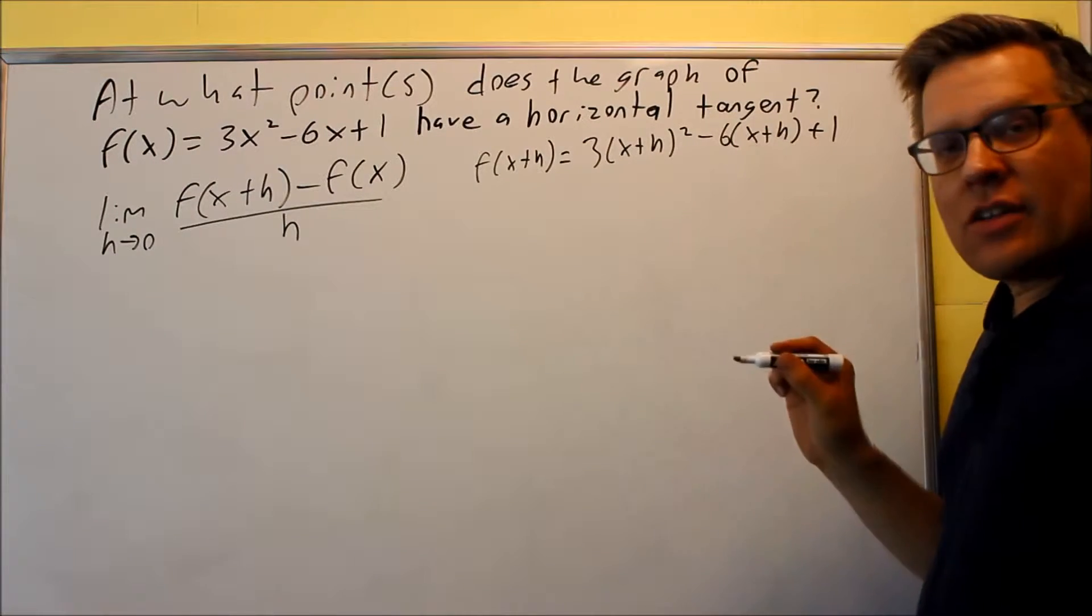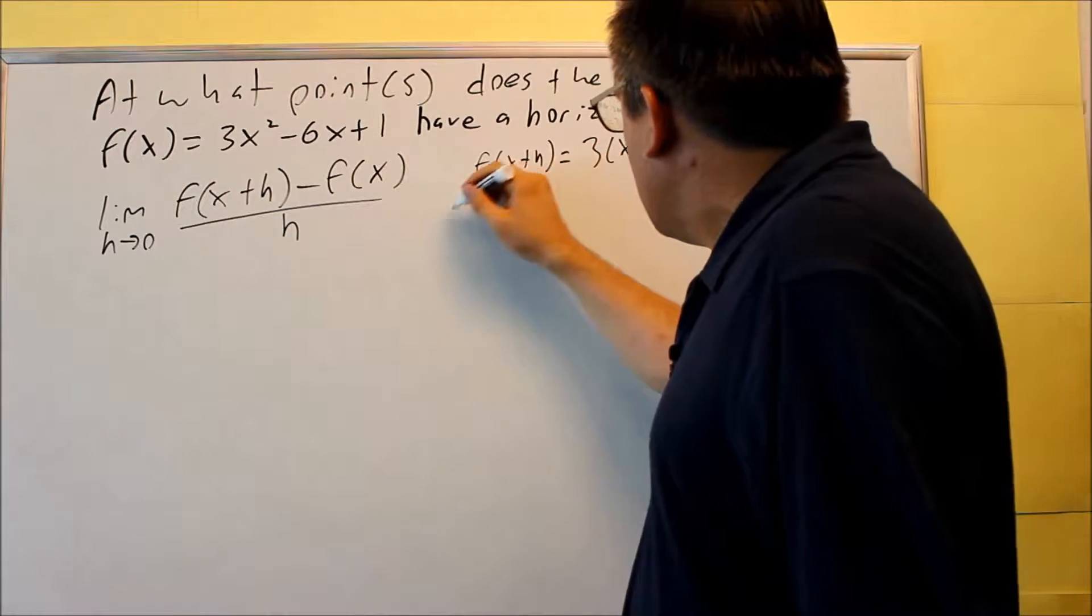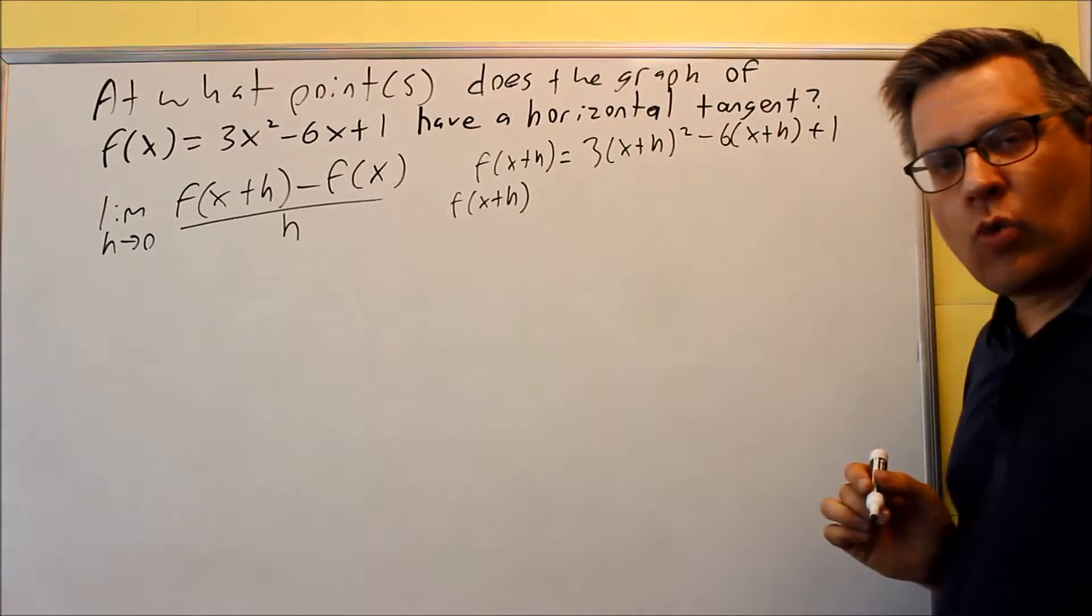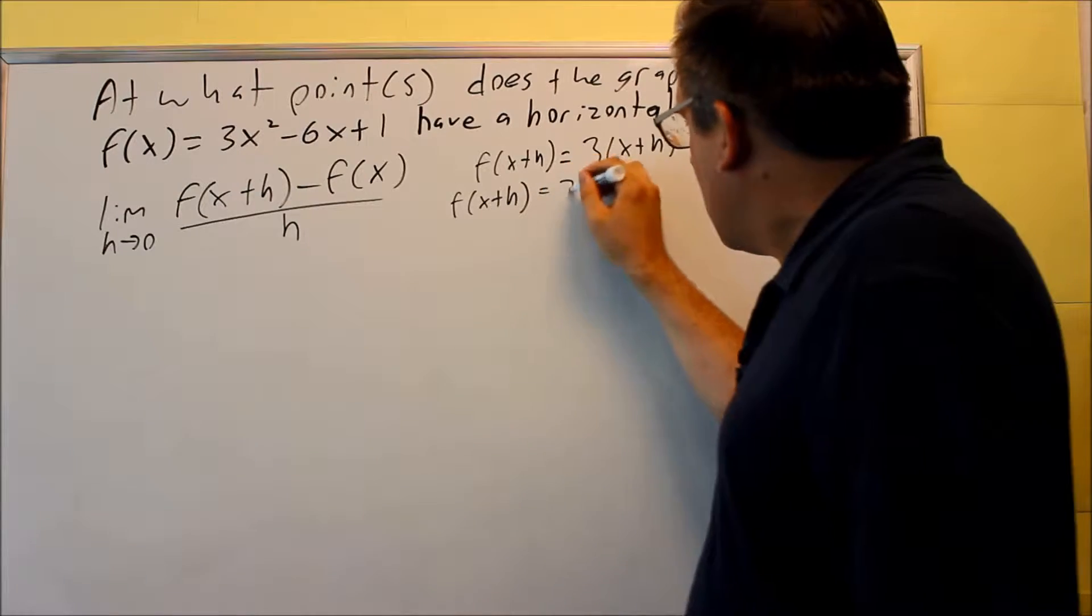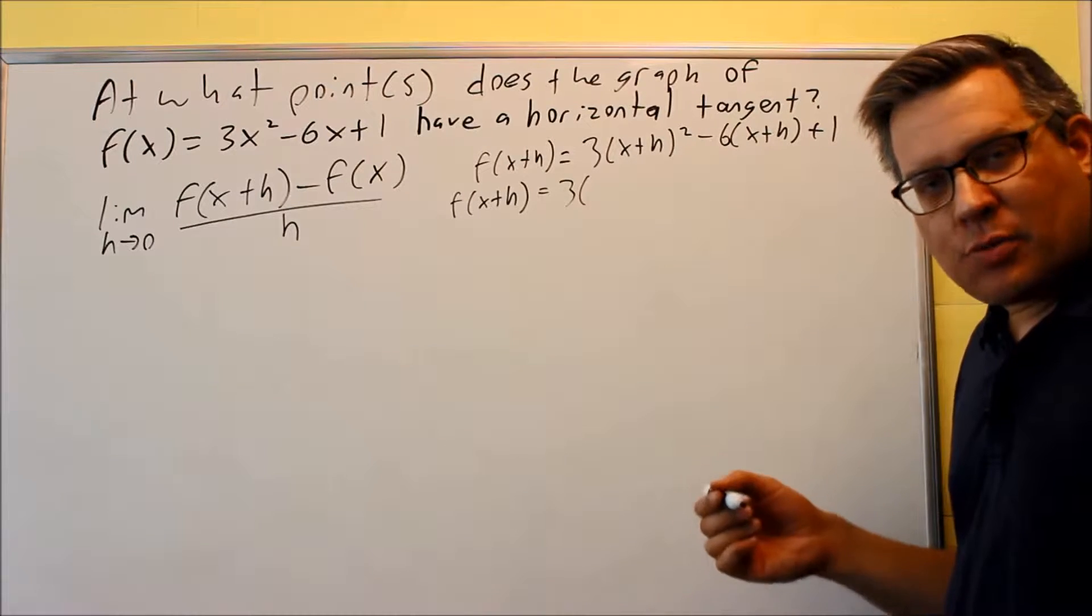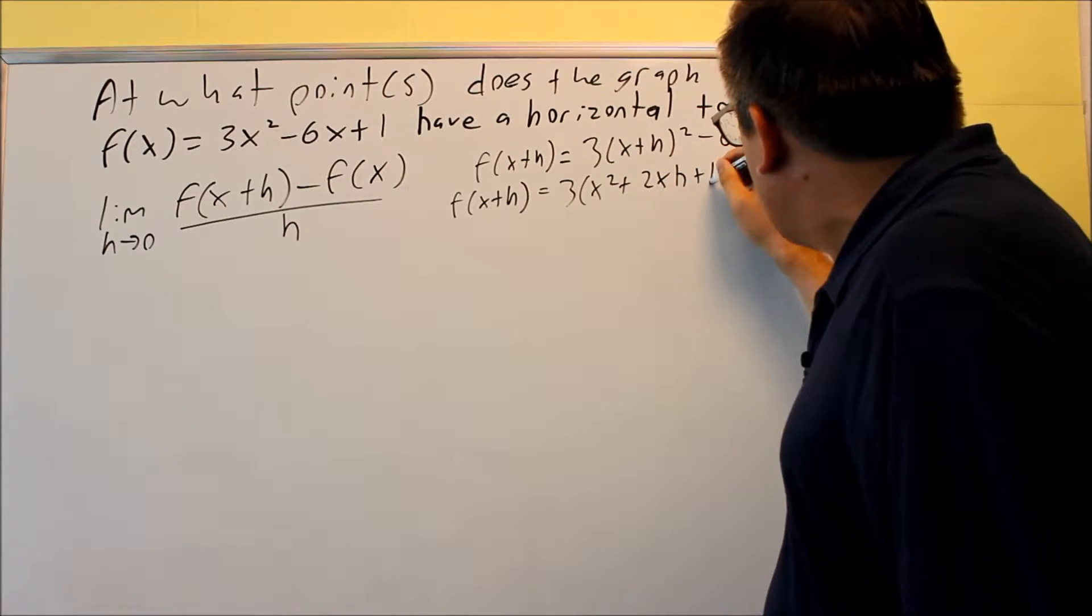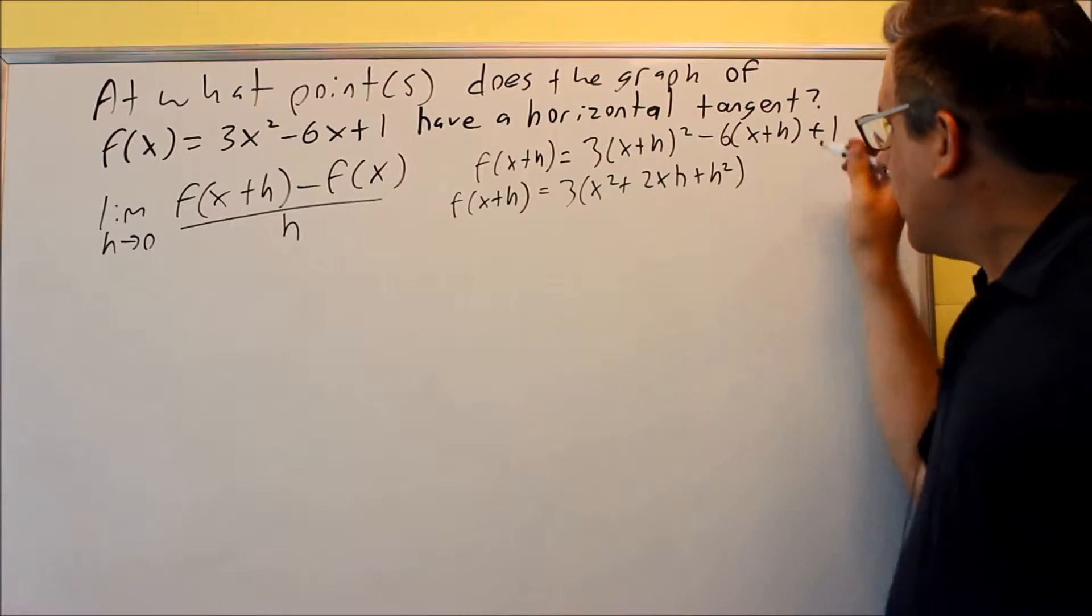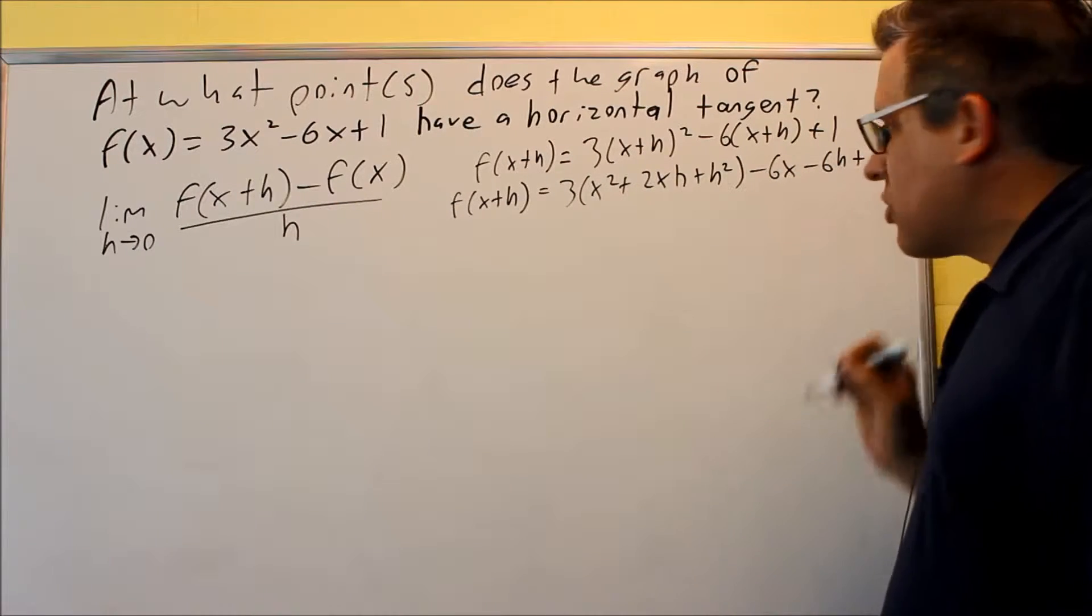Then I need to expand this out, and I'll put it back into the formula. To do this, first, I have to take care of the square. The square comes before multiplication. I've got to square that first. So I'm going to do 3 times (x + h)(x + h). If you multiply that together, you're going to get x² + 2xh + h². And then I have the rest of it: -6x - 6h + 1.